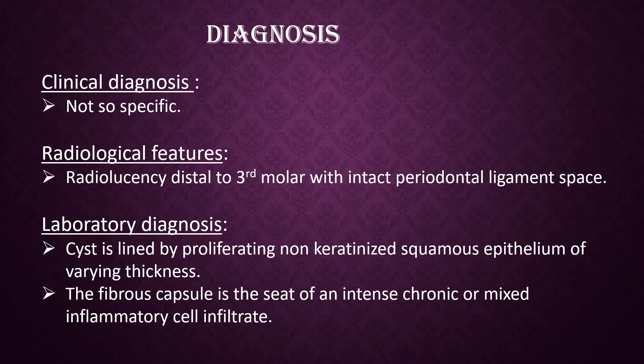Diagnosis. Clinical diagnosis is not so specific. Radiologically, radiolucency distal to the third molar with intact periodontal ligament space is seen. Laboratory diagnosis: the cyst is lined by proliferating non-keratinized squamous epithelium of varying thickness, and the fibrous capsule is the seat of an intense chronic or mixed inflammatory cell infiltrate.